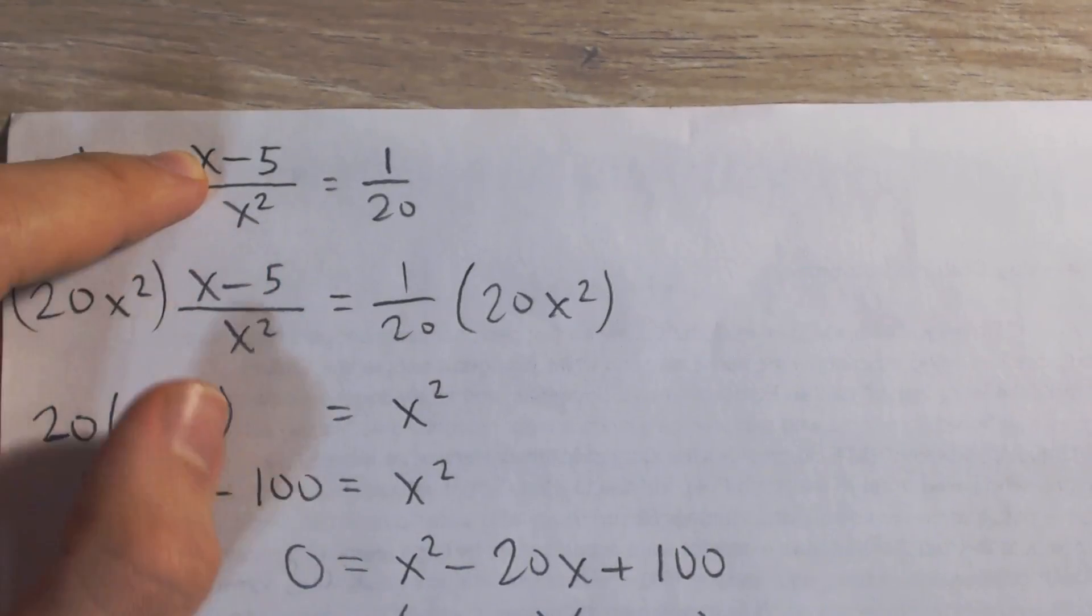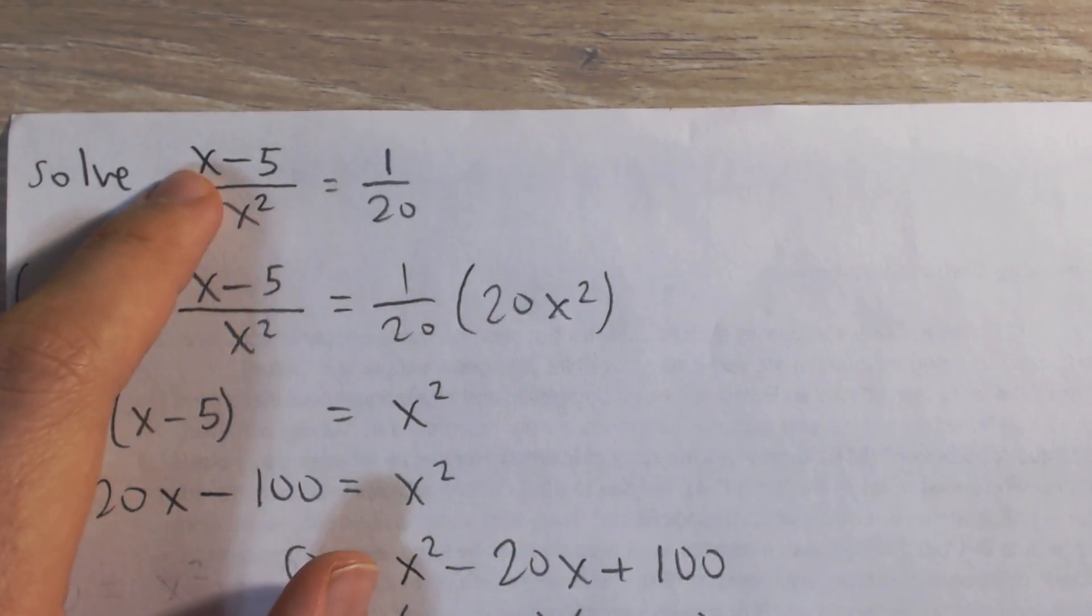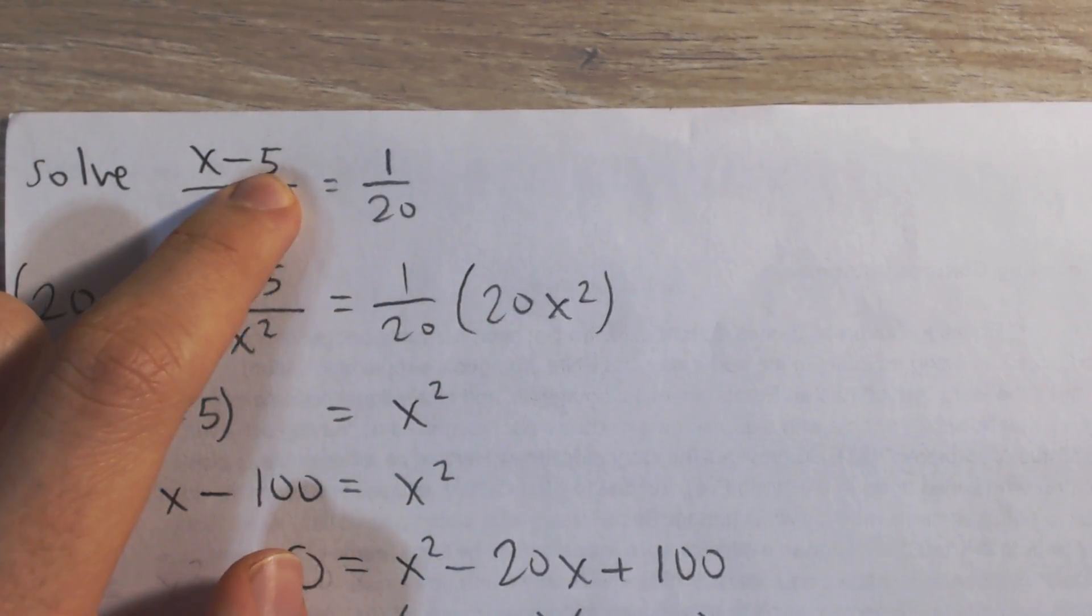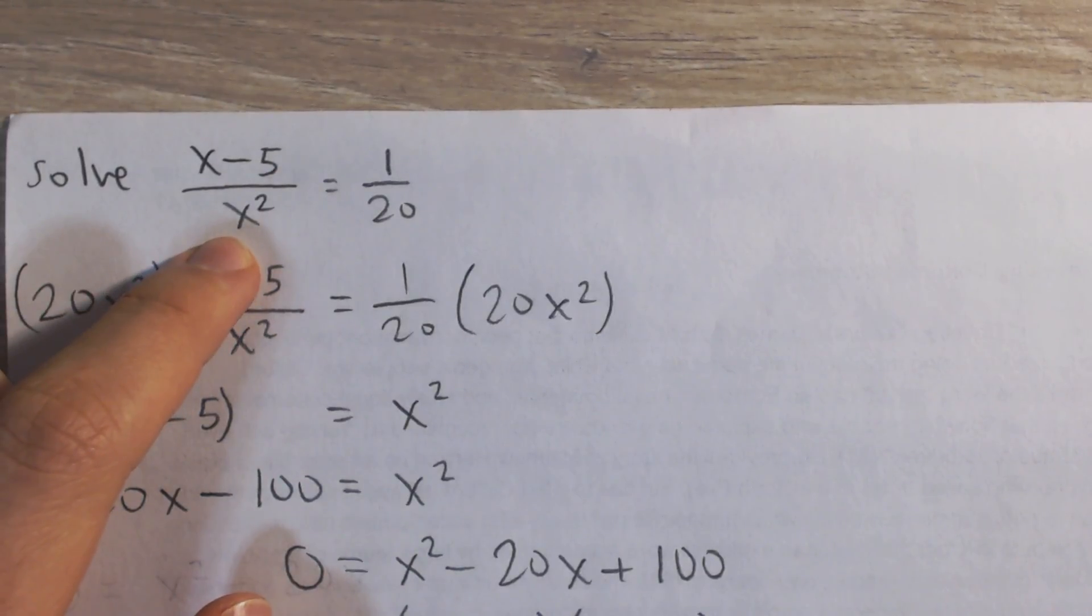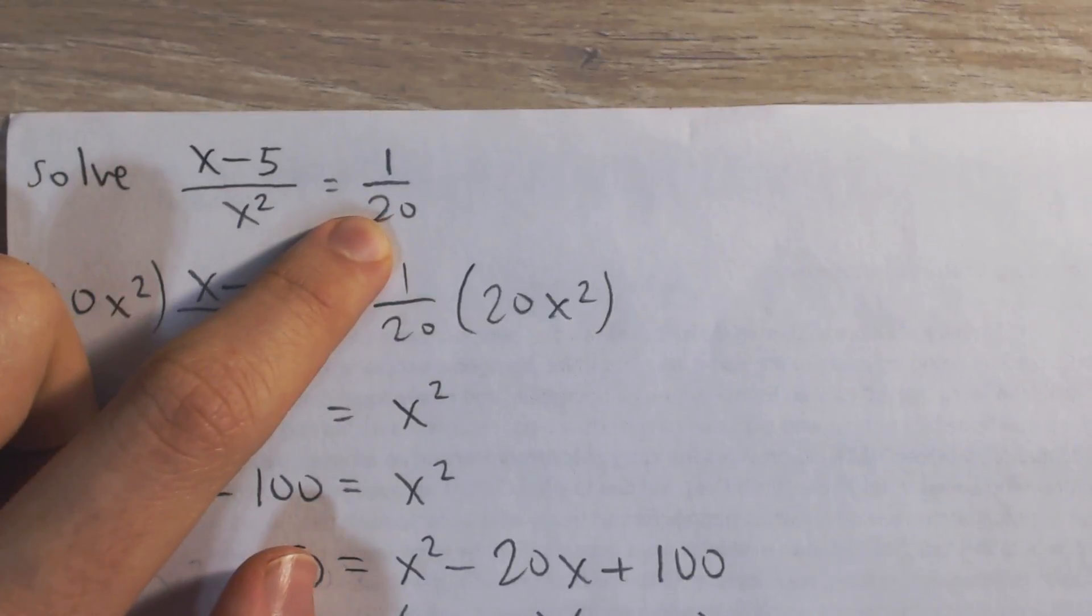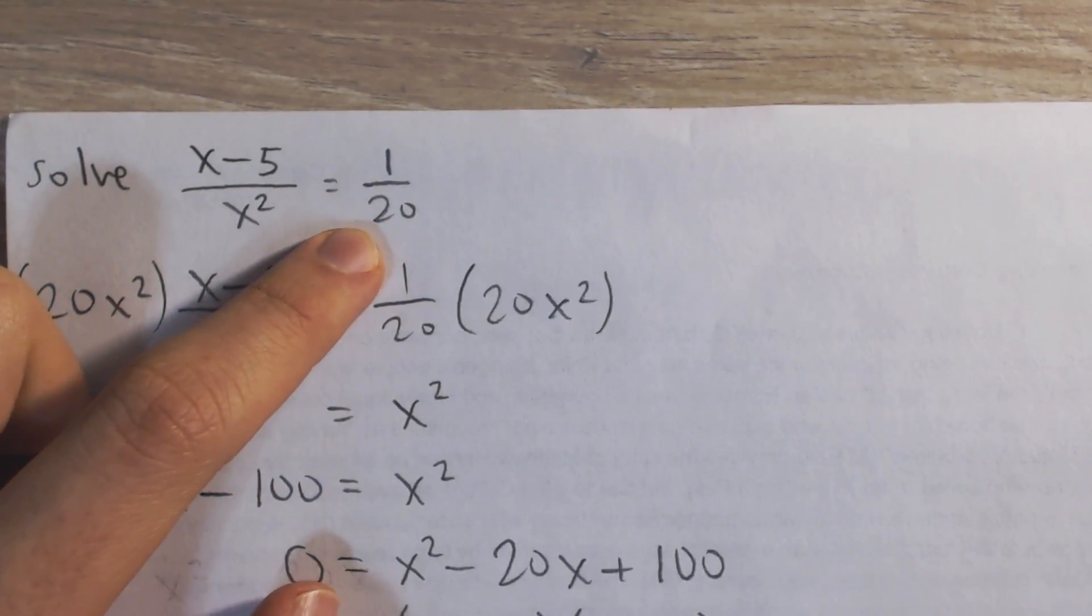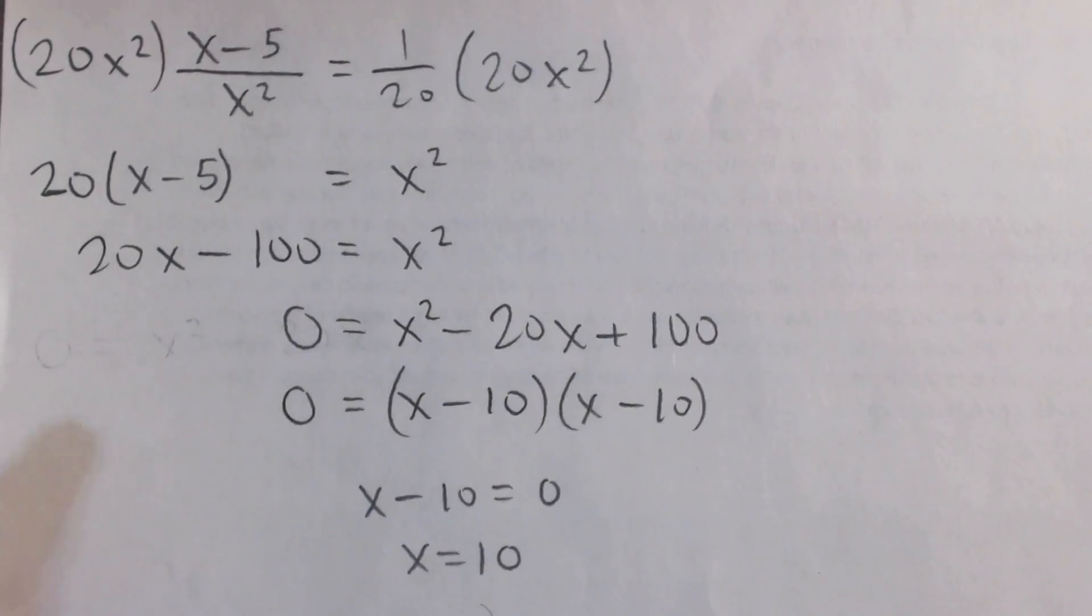But in this case, plug it in 10. Actually, why not? Let's check here. We have 10 minus 5, that's 5, divided by 10 squared, which is 100. So we have 5 divided by 100, and that is in fact equal to 1 over 20. And so this is our solution.